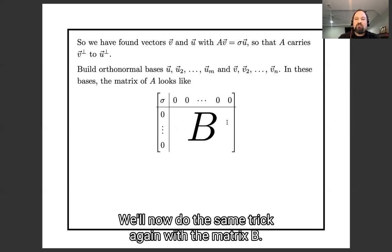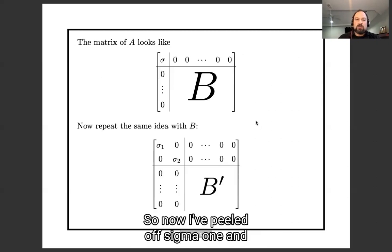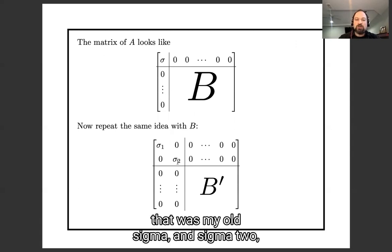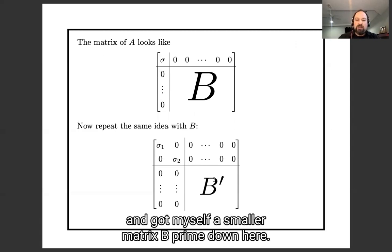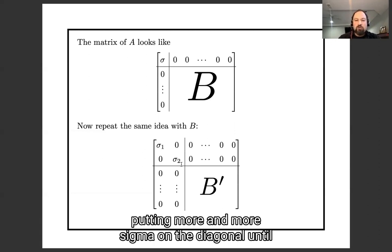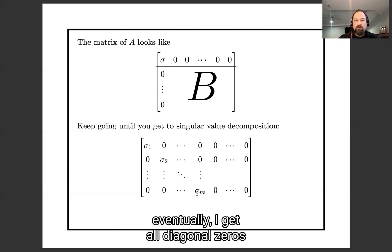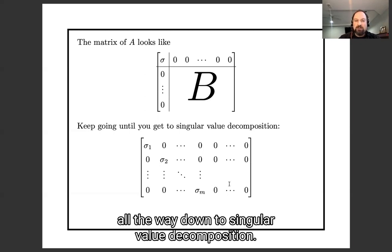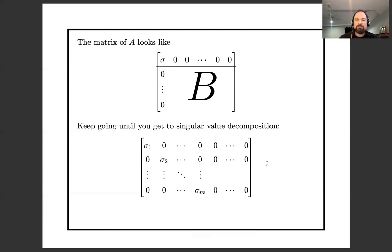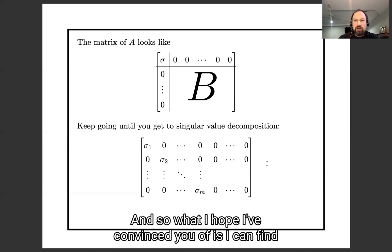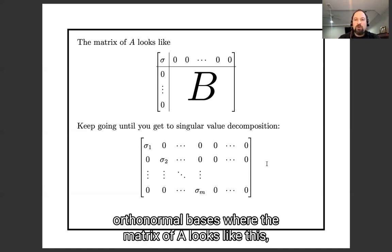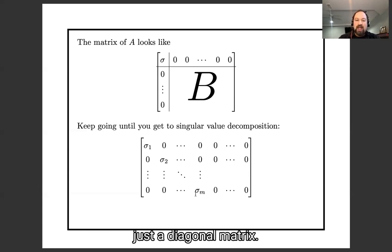We'll now do the same trick again with the matrix B. We peel off σ₁ and σ₂ and get a smaller matrix B' in the lower right. Continuing like this, putting more and more sigmas on the diagonal, until eventually we get a whole diagonal of sigmas all the way down — that's the singular value decomposition. What I hope I've convinced you of is that we can find orthonormal bases where the matrix of A looks like just a diagonal matrix.